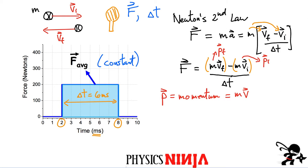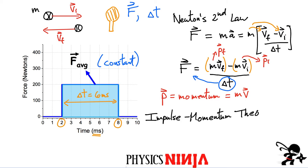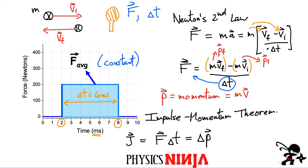Taking one more step, I bring delta T to the other side, which introduces a new definition called the impulse. Everything together is the impulse momentum theorem. Impulse is usually denoted by the letter J; J is a vector. The definition is: J equals force multiplied by time, and that equals P final minus P initial — which is simply the change of momentum of an object. This is the impulse momentum theorem.